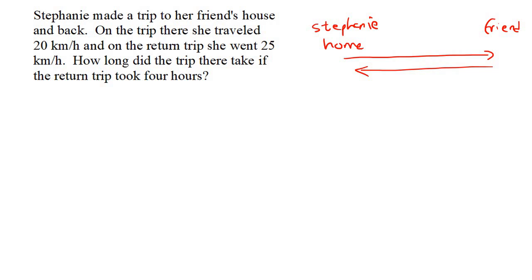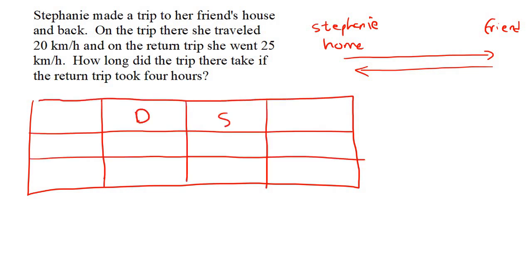Let's first get our little table. We can have distance, speed, and time. And then we're going to have to the friend, and then we could say return home.